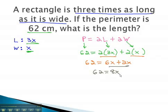Finally, to get x alone, we divide both sides by 8, and we get x is equal to 7.75.